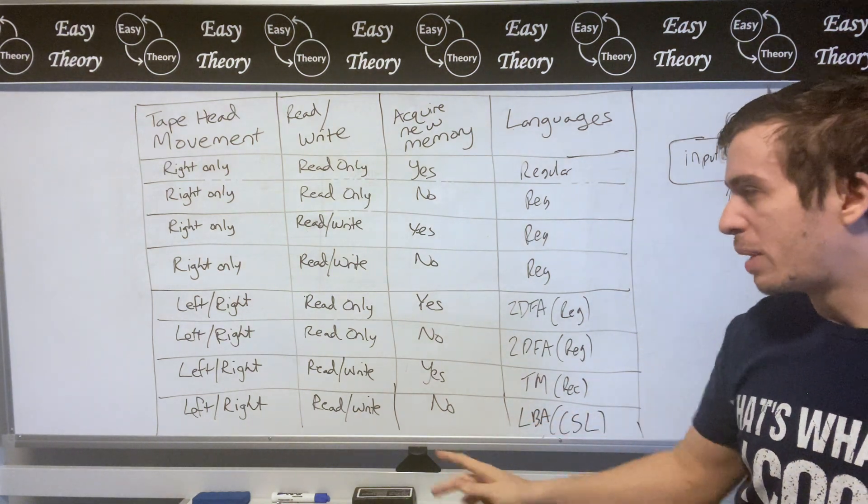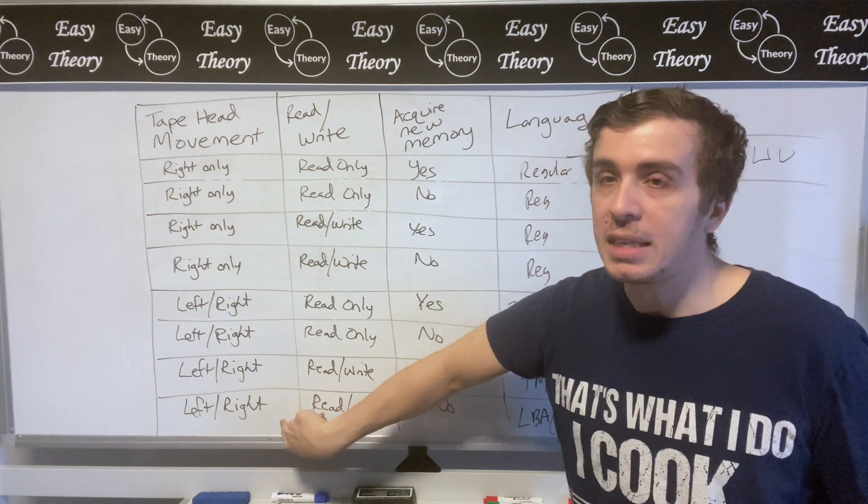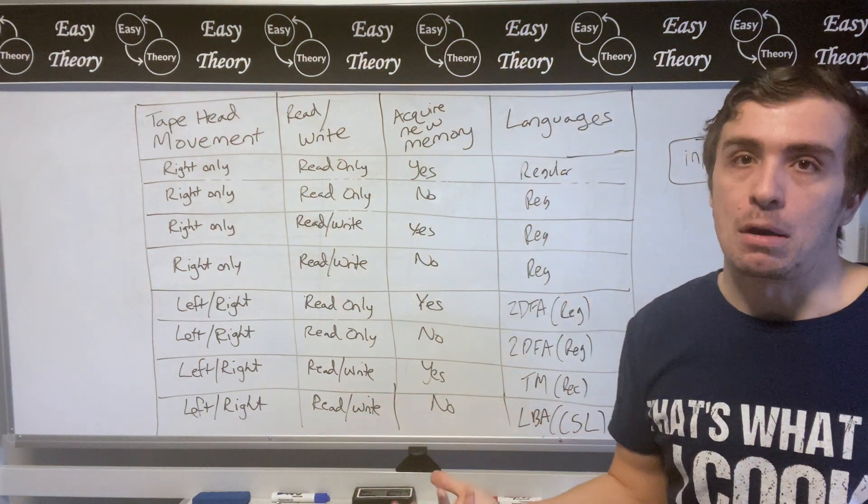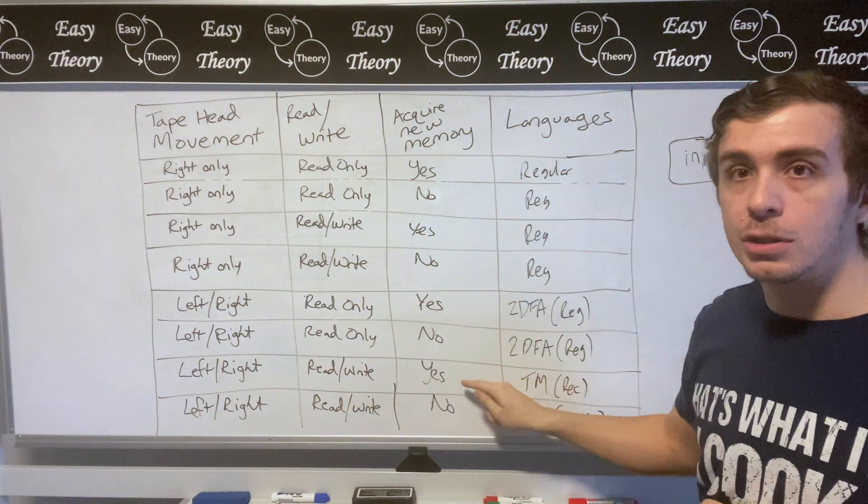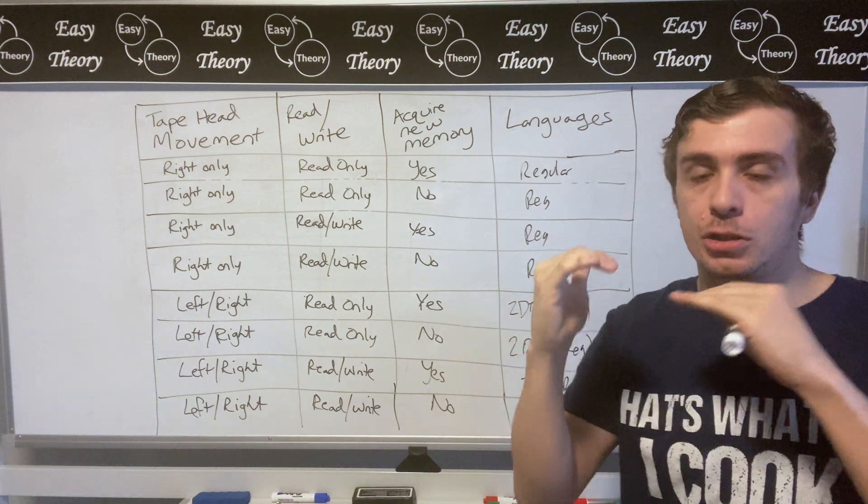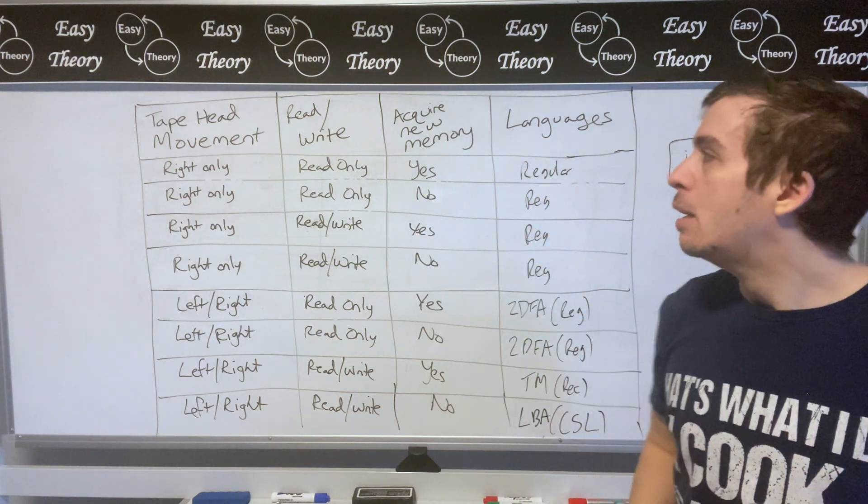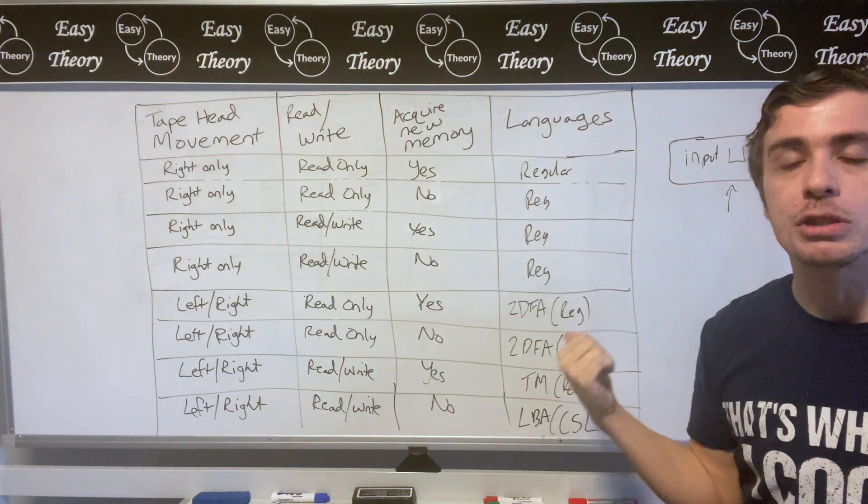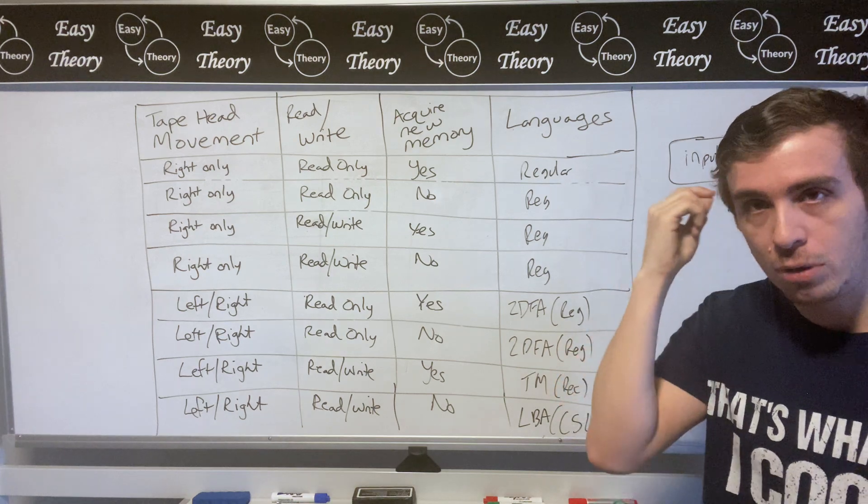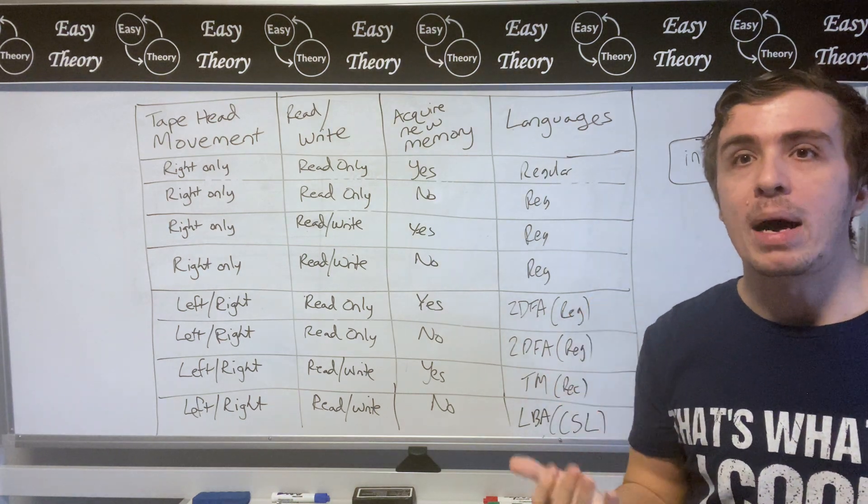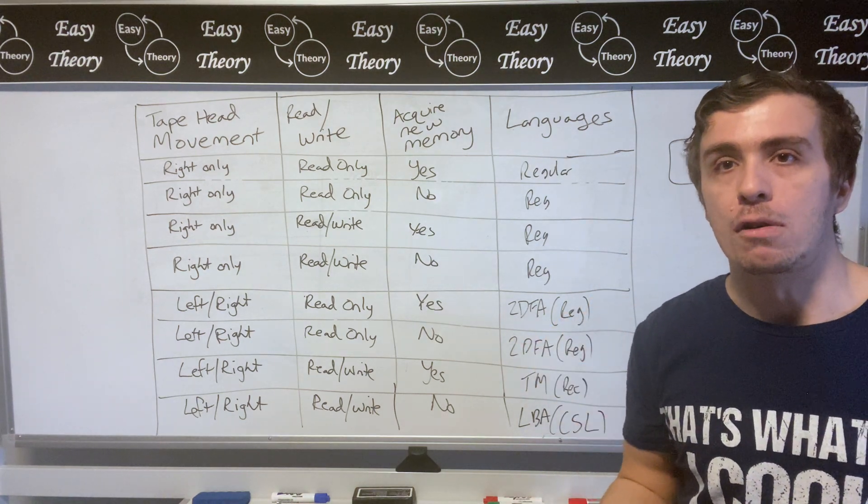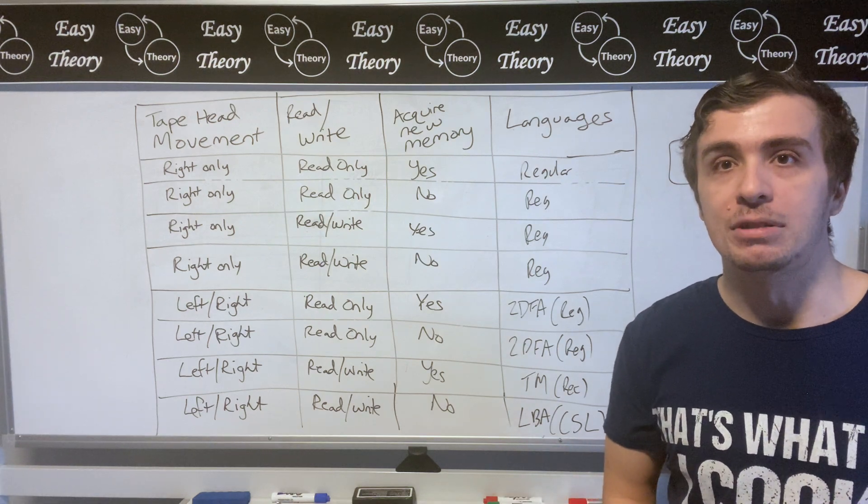So in some sense we only needed really these two to work together to get something more powerful than the regular languages. So the ability to acquire new memory is just only distinguishing between two different levels that are above regular languages. Which I think is pretty cool to do a short little exercise like this because it really makes you think about why Turing machines are more powerful than DFAs. So hopefully that was interesting.